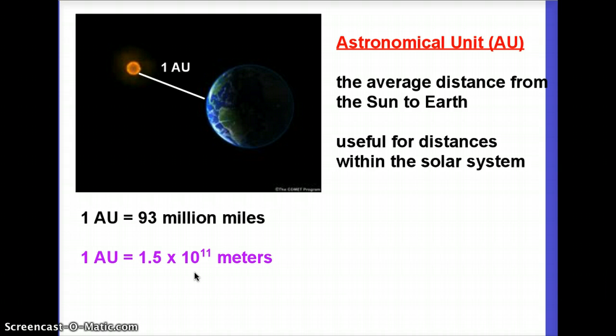I wrote that in purple — 1 AU equals 1.5 times 10 to the 11 meters — but that is not something you need to memorize for a test. I will give you all these conversions between distance units on the test. Just know that an astronomical unit is the distance from the Earth to the Sun, and make sure you know how to use it when doing conversions.